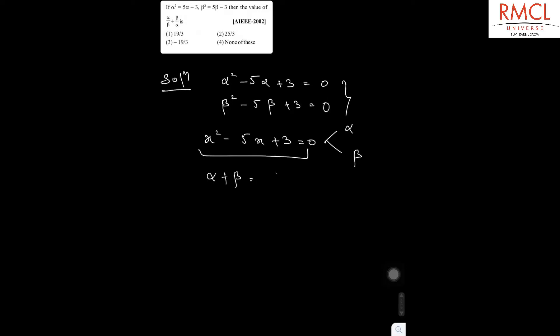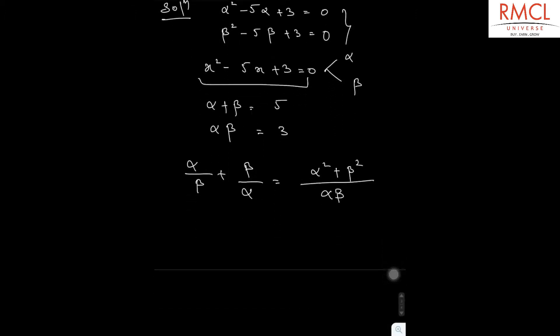The value we have to find is alpha by beta plus beta by alpha. This can also be written as alpha squared plus beta squared divided by alpha beta.